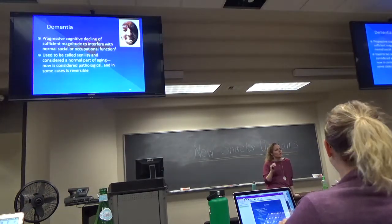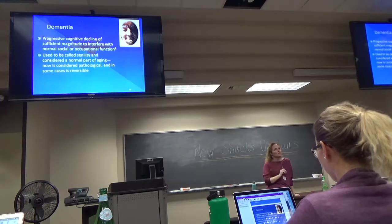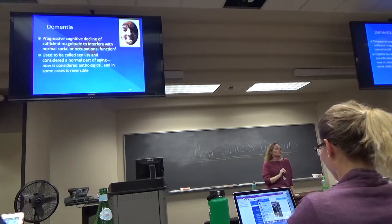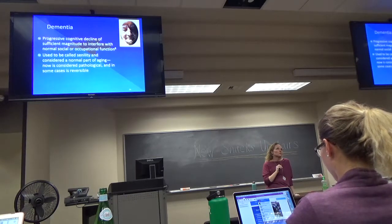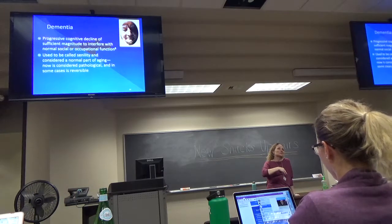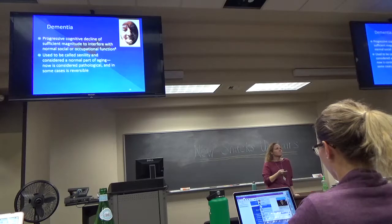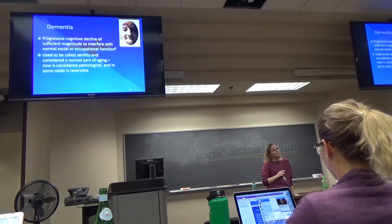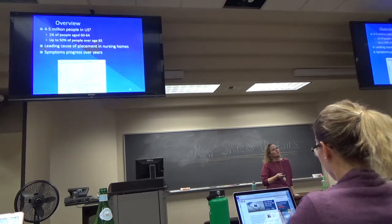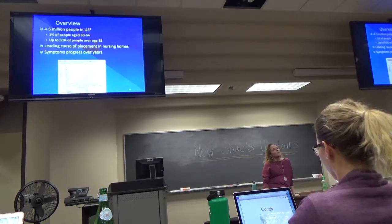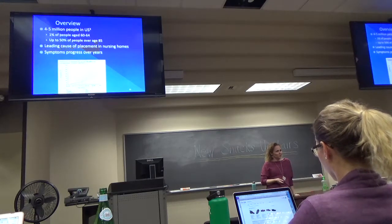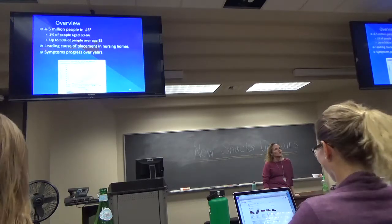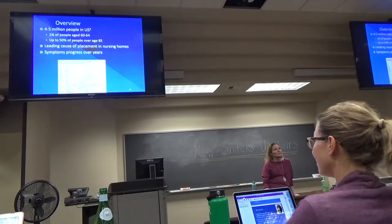Dementia is a progressive, not fluctuating, cognitive decline so significant that it interferes with their normal social and occupational function. We used to just think it's just old age, but no, it's not. Depending on the cause, it might be reversible. In younger older patients — 60 to 64 — it's about 1%. But when you get up to 85 and older, it's about half.